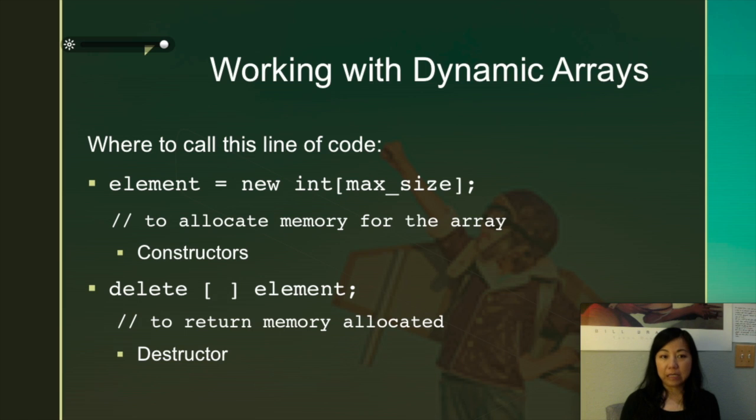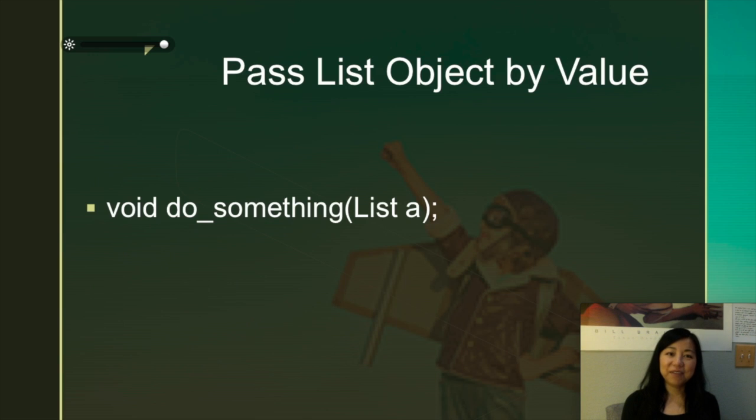So you've seen in the last video that we dealt with the two lines of code that we need for every dynamic array, which is the line that creates the dynamic array when we know the size and to delete the pointer or to delete the array, the memory that's allocated for the array, not the pointer itself. You can't delete the pointer.